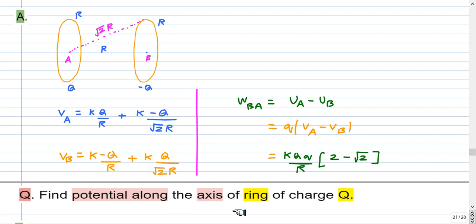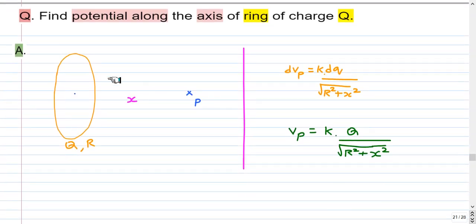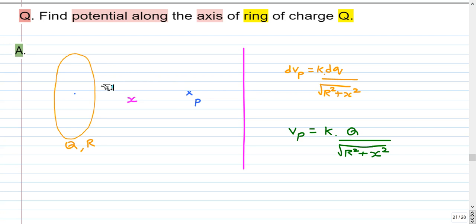Question: find the potential along the axis of a ring of charge Q and radius R. Let the point P be at distance x from the center along the axis. Each element dq of the ring is at distance √(R² + x²) from P (hypotenuse of right triangle with legs R and x). The potential due to element dq is k·dq/√(R² + x²). Since all elements are at the same distance, the total potential is simply k·Q/√(R² + x²).